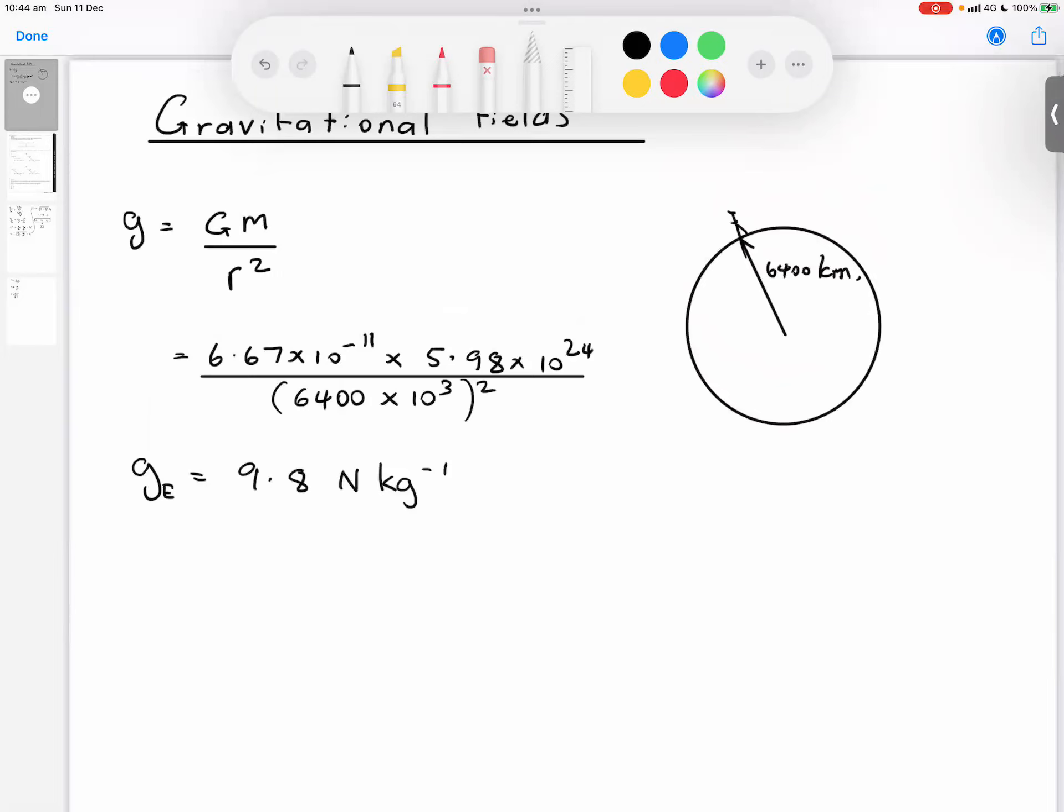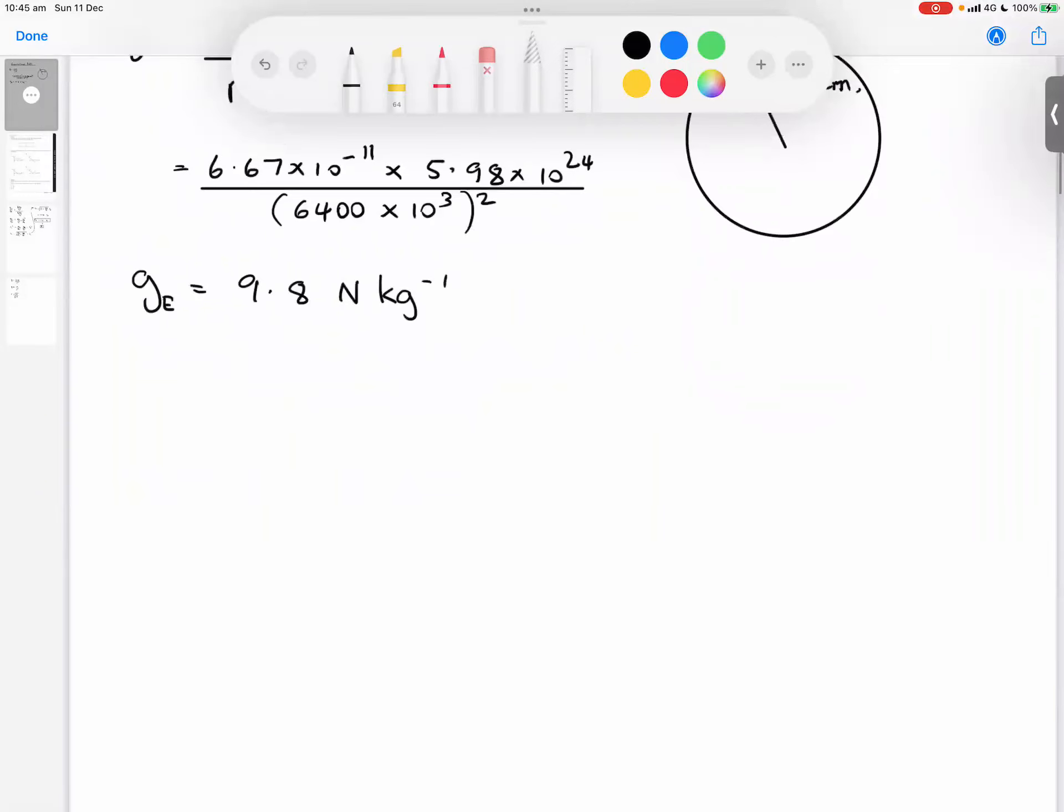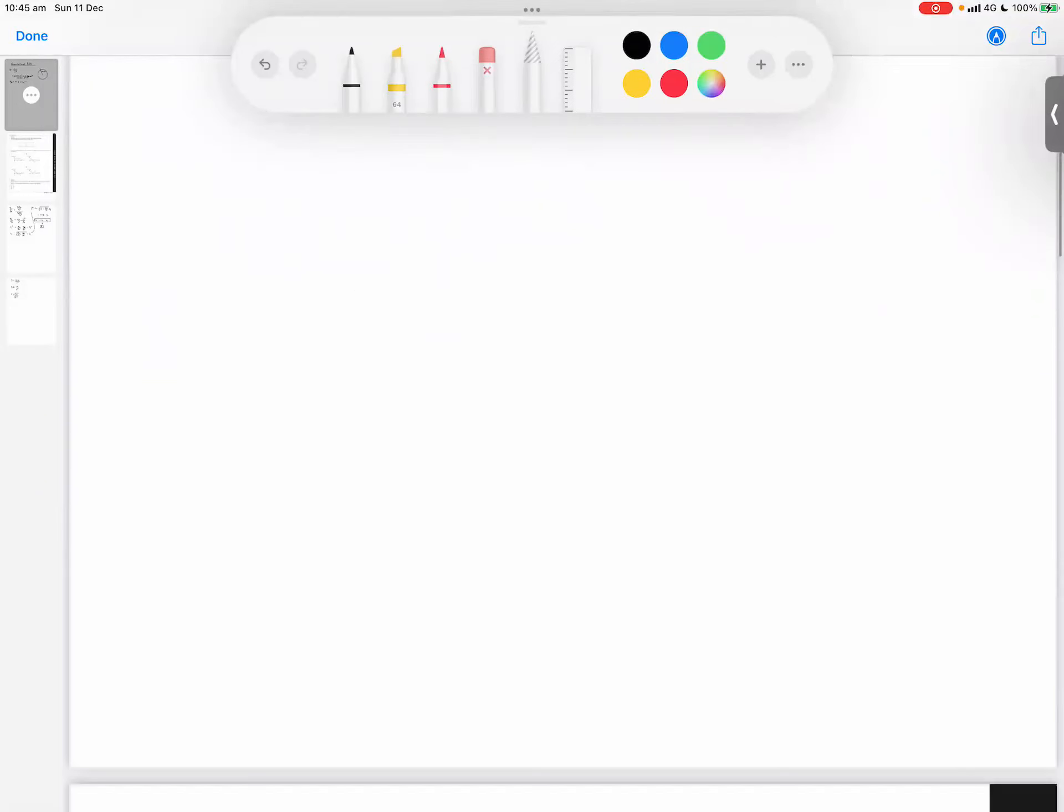That's how we calculate g. G for other planets, for example Mars, will be calculated if we know the mass of the central body Mars and if we know the radius of Mars. It's a little bit less for Mars. The moon has one-sixth the gravitational field strength of the earth.